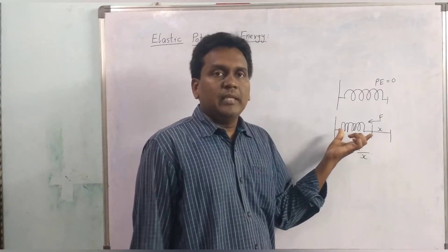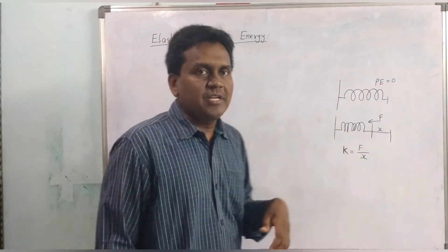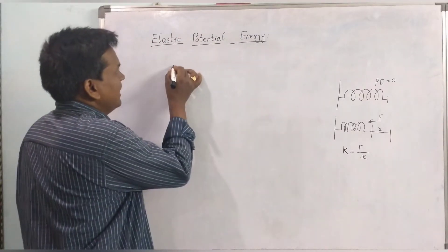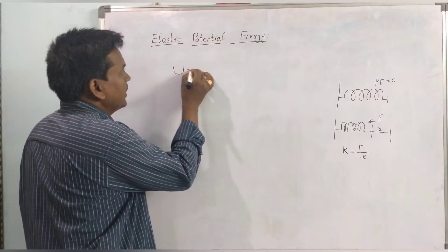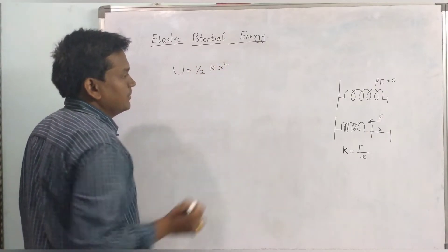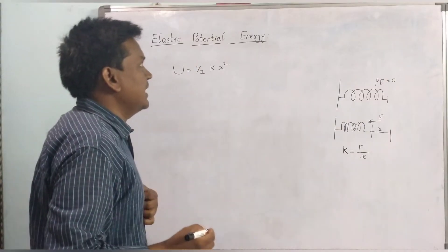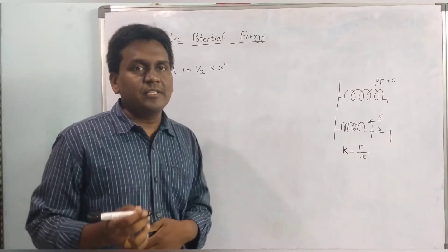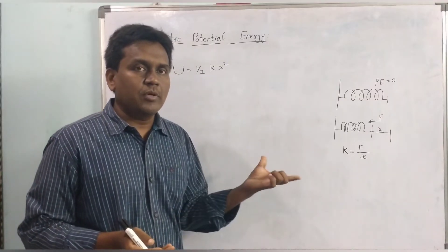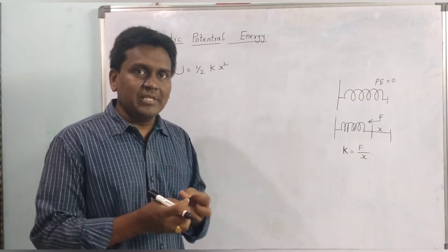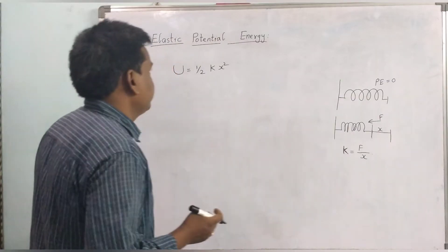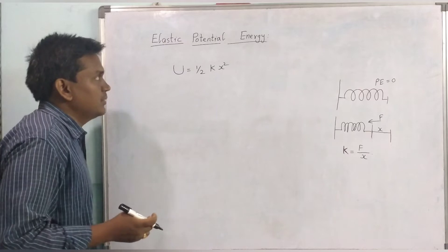The elastic potential energy stored in the spring is defined as U equal to half k x square. That is the elastic potential energy stored in the spring which is compressed or elongated by an amount of x.